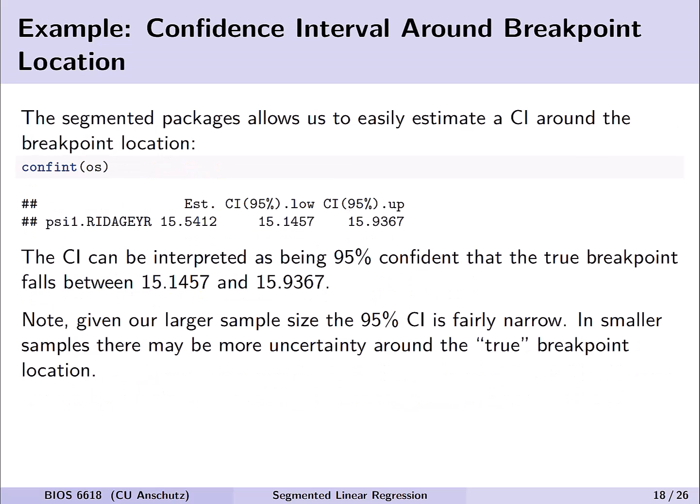From the segmented package, we can easily get a confidence interval around the breakpoint location using the confint function. It provides the breakpoint estimate and its lower and upper confidence interval. In this case, we can interpret it as being 95% confident that the true breakpoint in the population falls between approximately 15.15 and 15.9 years of age. In our large sample the CI is fairly narrow; in smaller samples you may have more uncertainty around the true breakpoint location.